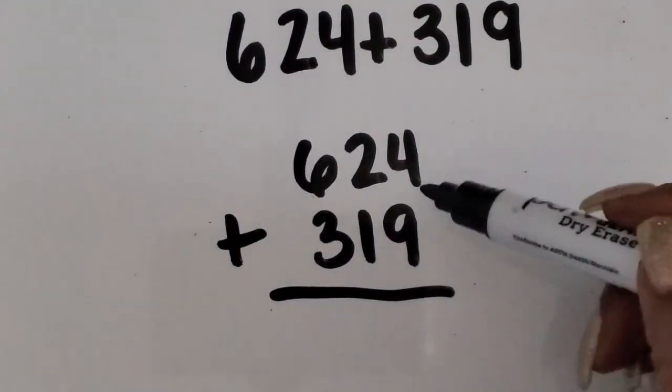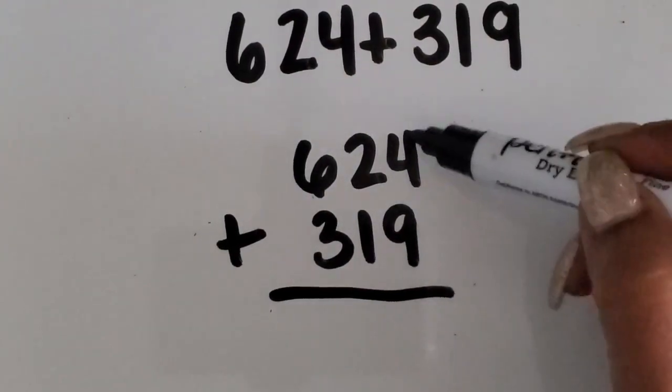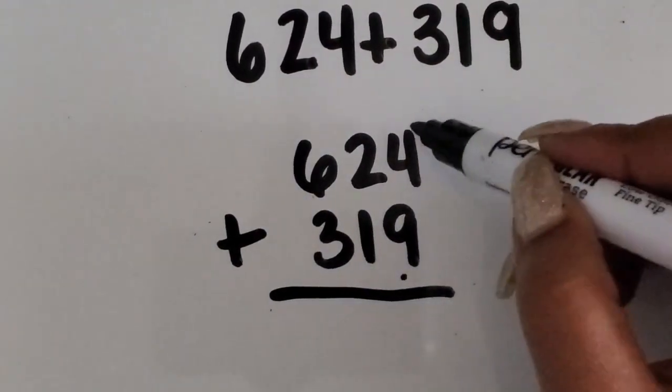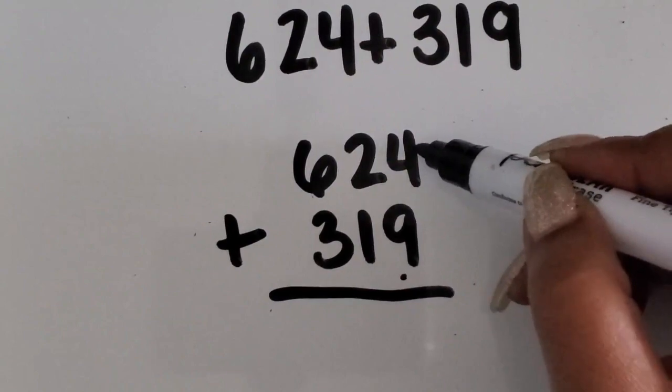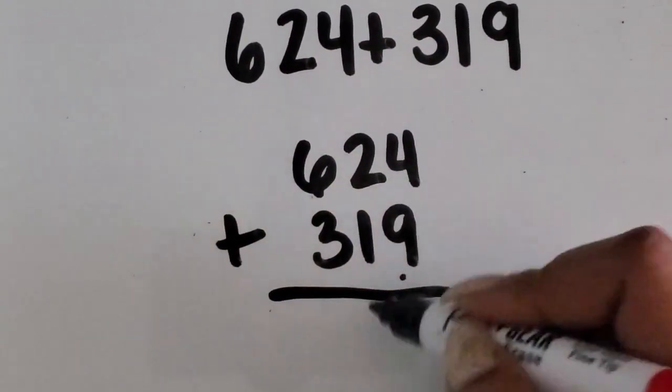Now we're going to write out the sum or the part of the sum based on the place value. So I'm going to write out the sum of the ones. Four ones plus nine ones is thirteen ones.